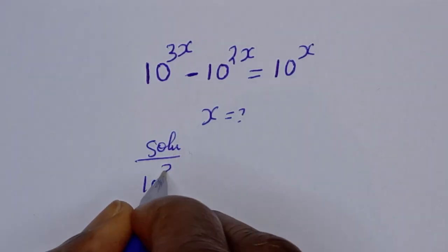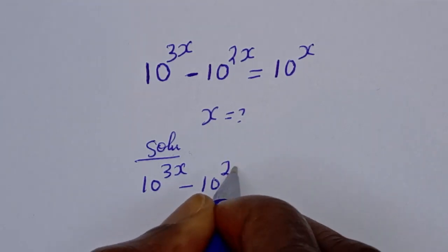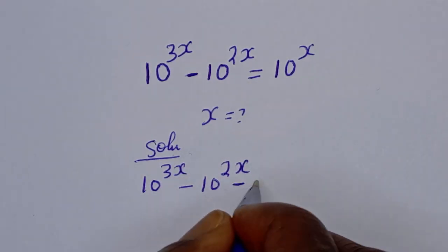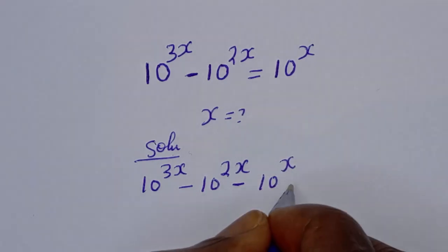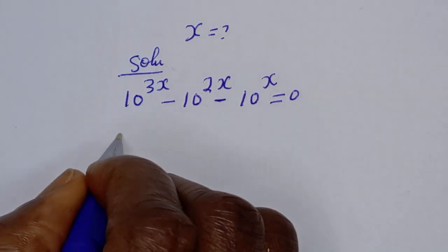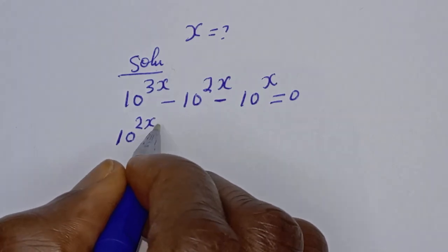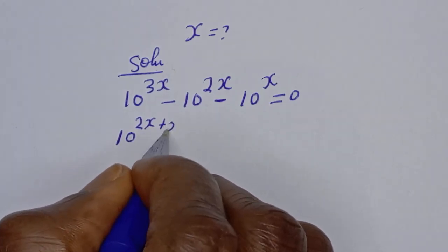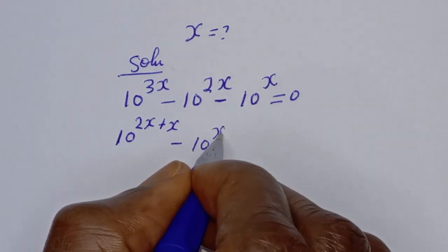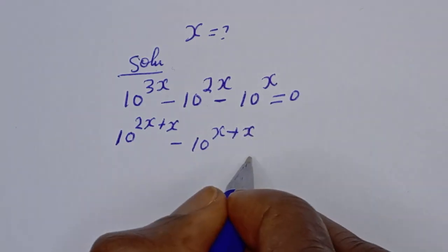10 raised to power 3s minus 10 raised to power 2s — let's bring this to this side. It becomes minus 10 raised to power s is equal to 0. And this can be written as 10 raised to power 3s, which can be written as 2s plus s, minus 10 raised to power s plus s, minus 10 raised to power s.